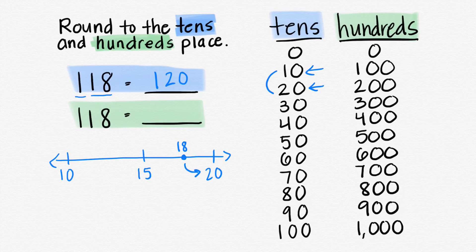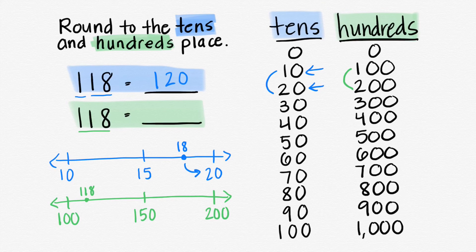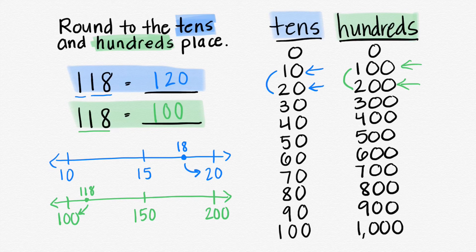Now let's round to the hundreds place. We're going to start at the hundreds and on, and we know 118 falls between 100 and 200. Let's make our number line: we have 100, 200, halfway is 150. We know 118 would be closer to the 100. Is 118 closer to 100 or 200? It's a lot closer to 100, so 118 rounds to 100 when rounded to the closest hundred.